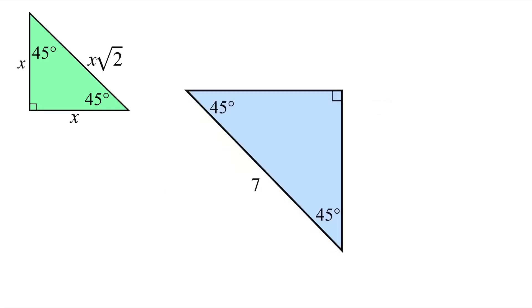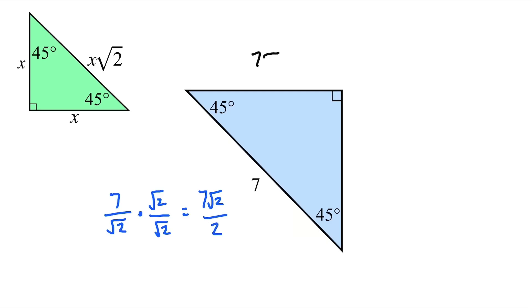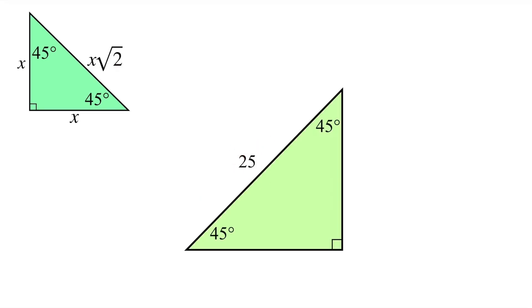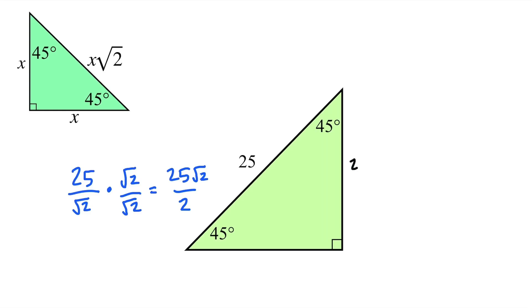What if the hypotenuse is just a regular integer, like 7? We divide 7 by root 2, giving us 7 over root 2. Since many people don't like square roots in the denominator, we rationalize by multiplying the top and bottom by root 2, which gives us 7 root 2 over 2. So both legs are 7 root 2 over 2. Similarly, with a hypotenuse of 25, we get 25 over root 2, which rationalizes to 25 root 2 over 2 for each leg.